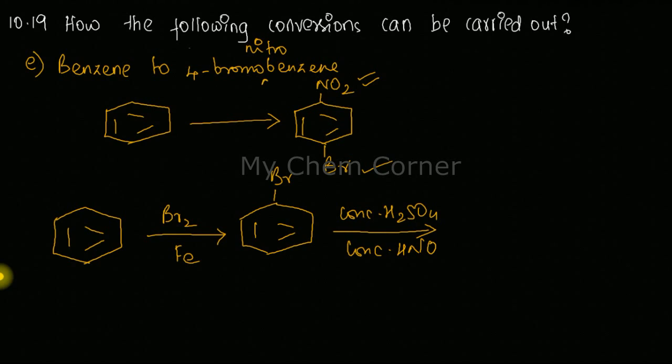Now to this, when you do nitration with concentrated H2SO4 and concentrated HNO3, we will get the nitro group in the para position. So BR is here and the para position is nitro. That gives our product.